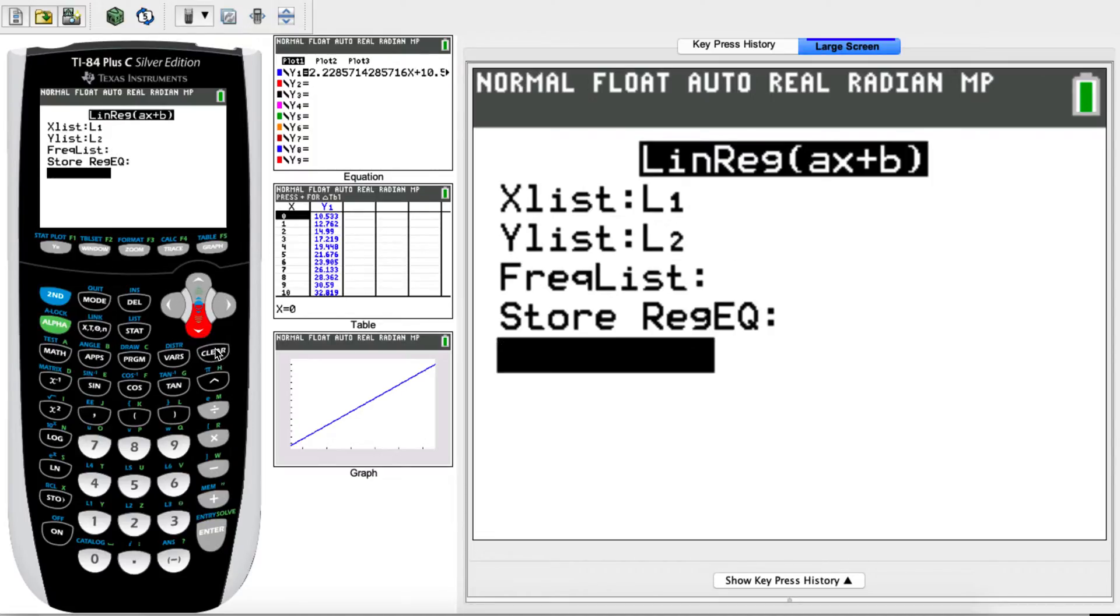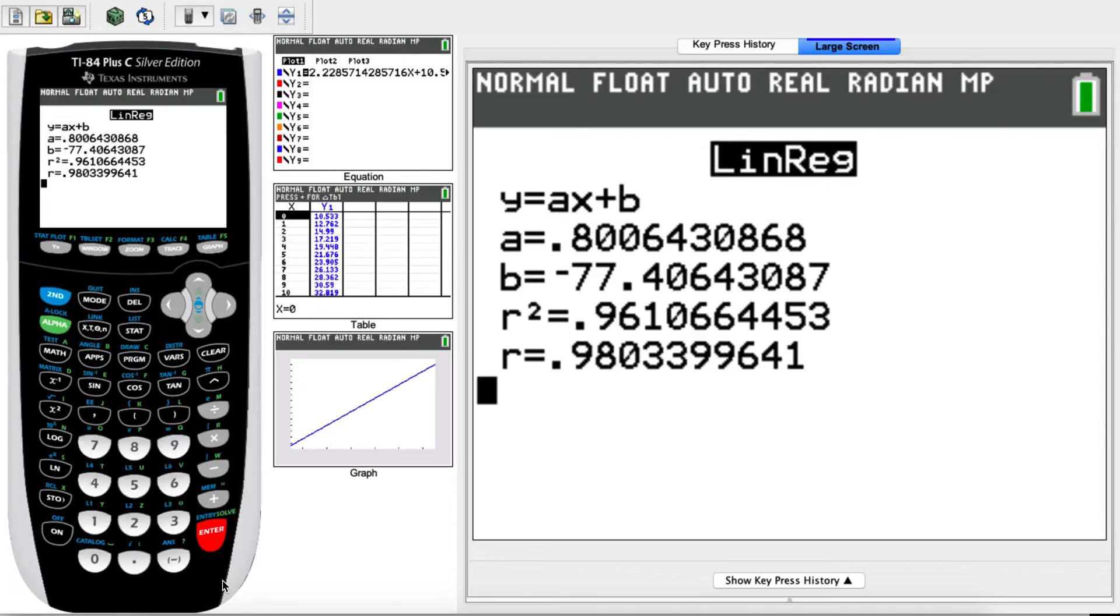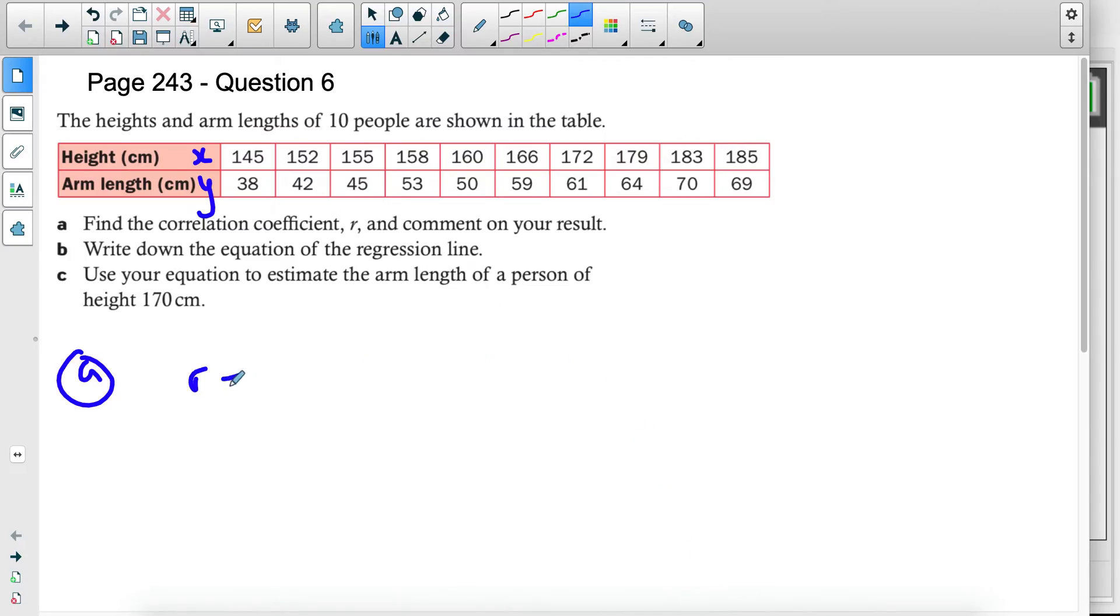Next you're going to go to calculate, press enter. And then you're going to get your value. So you're going to get the A and B, which I'm going to discuss for part B. You're going to get your R square and then your R value as well. So you need to ignore the R square value. All you need is your R value. And we need to write all of our values to three significant figures unless the question asks you for more specific significant figures. For this one, I have 0.980. So that's my three significant figures here. And that's my R value. So 0.980. This is three significant figures.